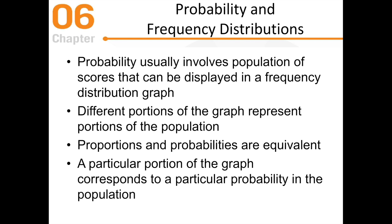Probability usually involves a population of scores that can be displayed in a frequency distribution graph. You can pull your data from that and display it in a normal distribution to get probability from it. Different proportions of the graph represent different proportions of the population. Proportions and probabilities are equivalent — a 0.2 proportion is the same as a 20% chance. A particular portion of the graph corresponds to a particular probability in that specific population.